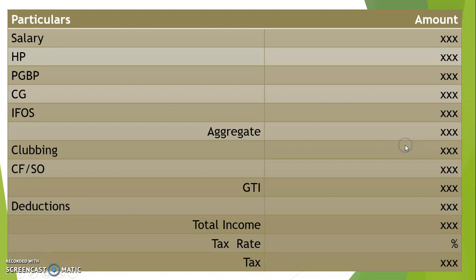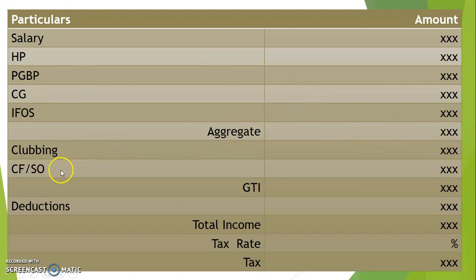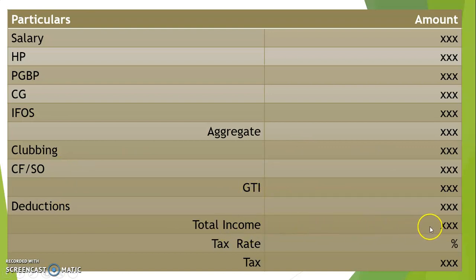To summarize with a table: five heads, total is called the aggregate income; we do the clubbing, carry forward, and set-off, and we get the gross total income; we do the deductions as per 80C to 80U, we get the total taxable income; and on that we apply our tax rate and calculate the tax to be paid.